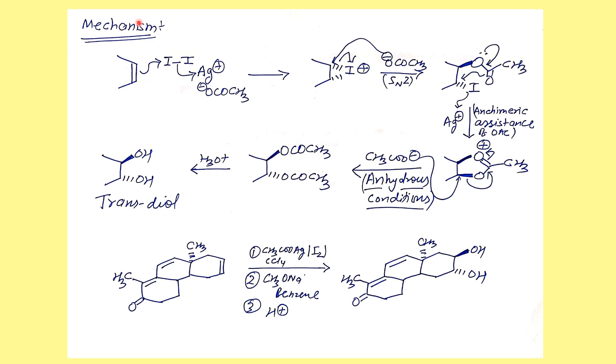If we talk about the mechanism of the reaction, it starts with the attack of the alkene on the iodine, and this iodine bond is polarized by coordination with the mercury salt.